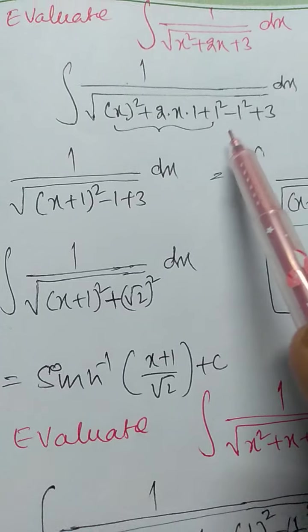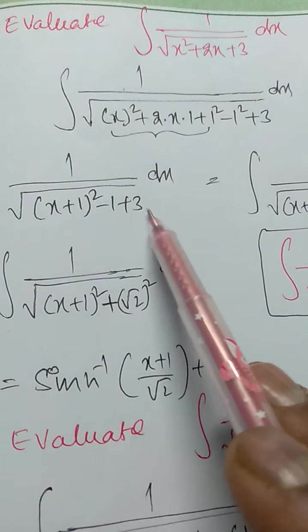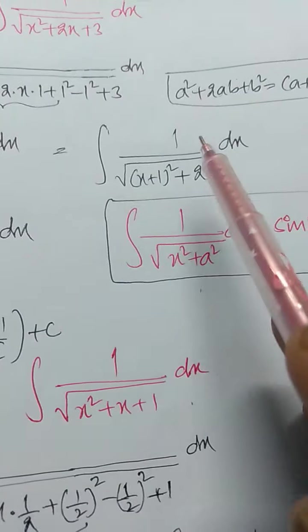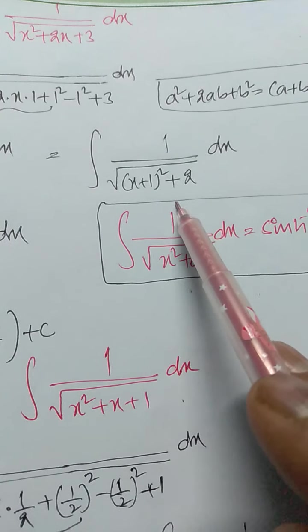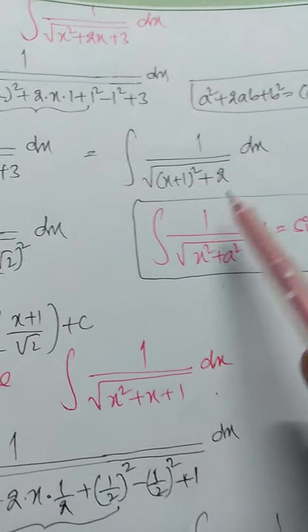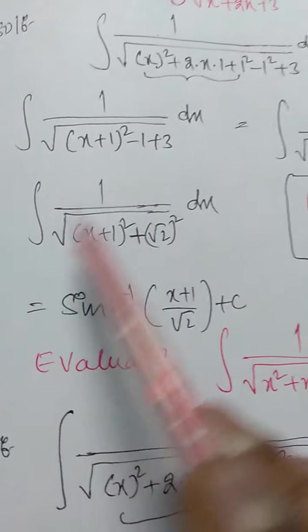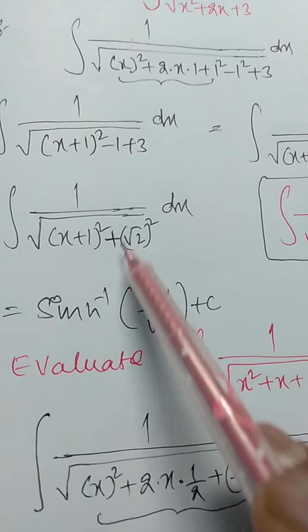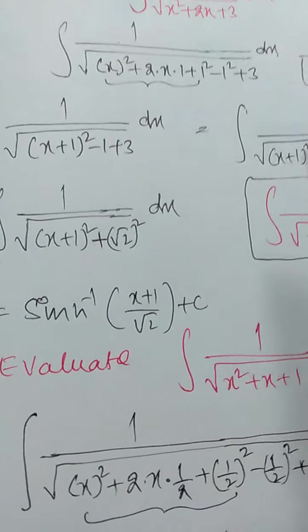So we can write it as integration of 1 by root of x plus 1 whole square, minus 1 plus 3 — that is 3 minus 1 equals 2. So integration of 1 by root of x plus 1 whole square plus 2, dx. And 2 can be written as root 2 whole square: integration of 1 by root of x plus 1 whole square plus root 2 whole square, dx.